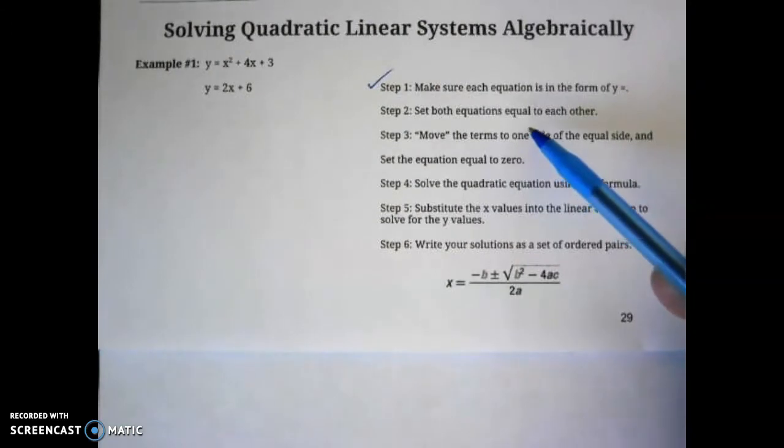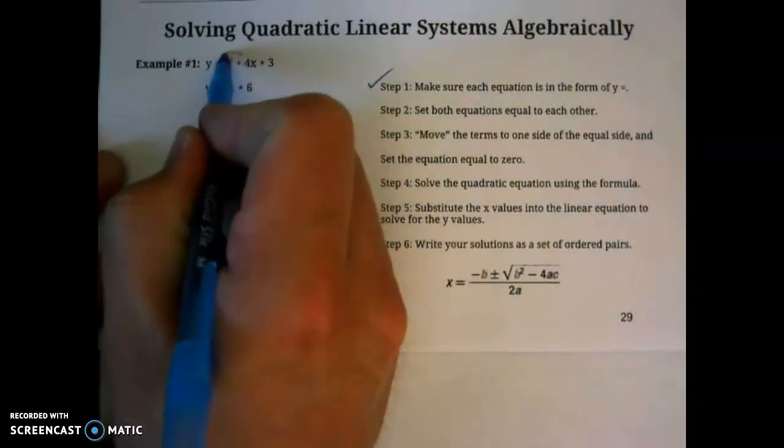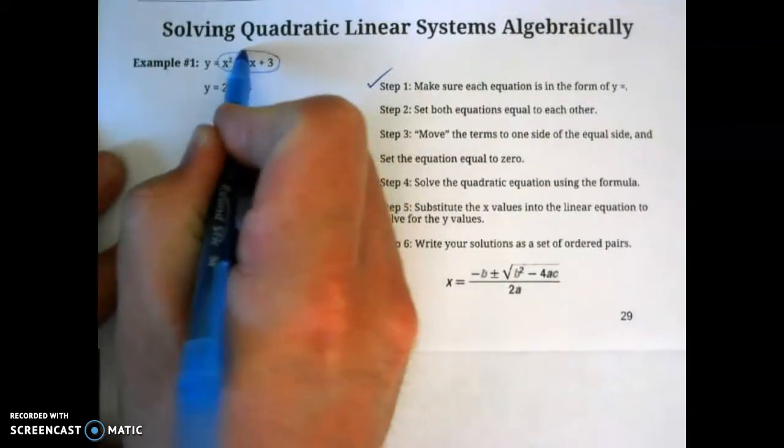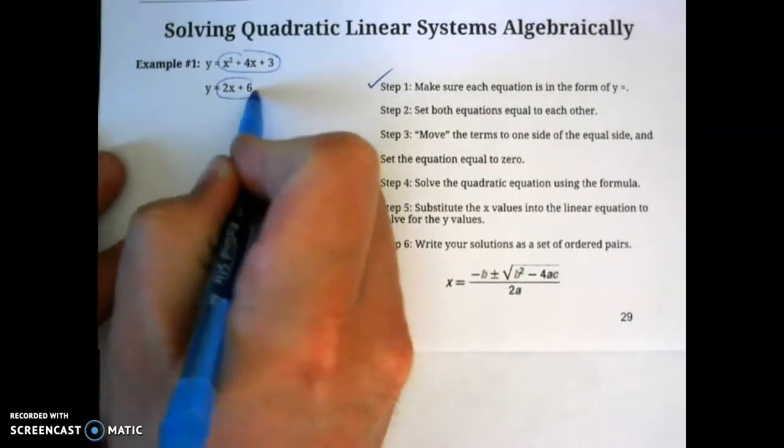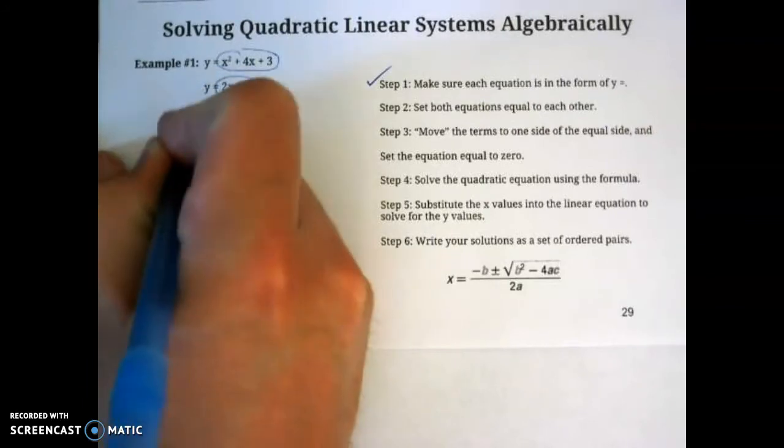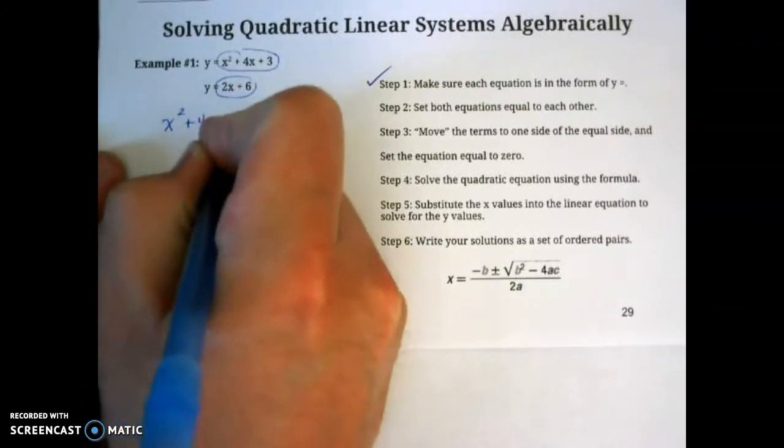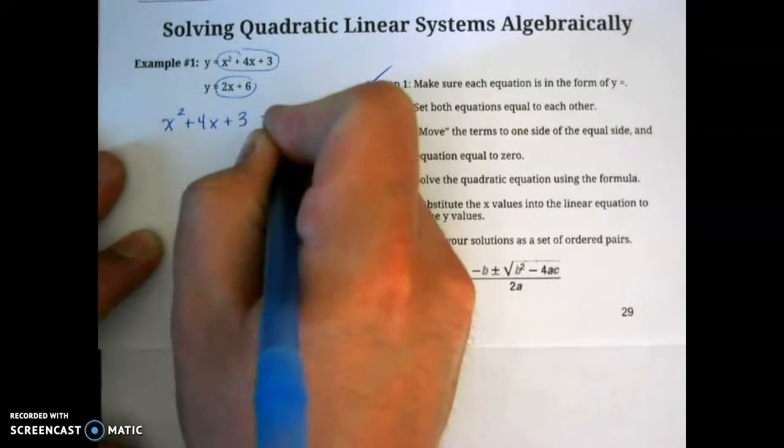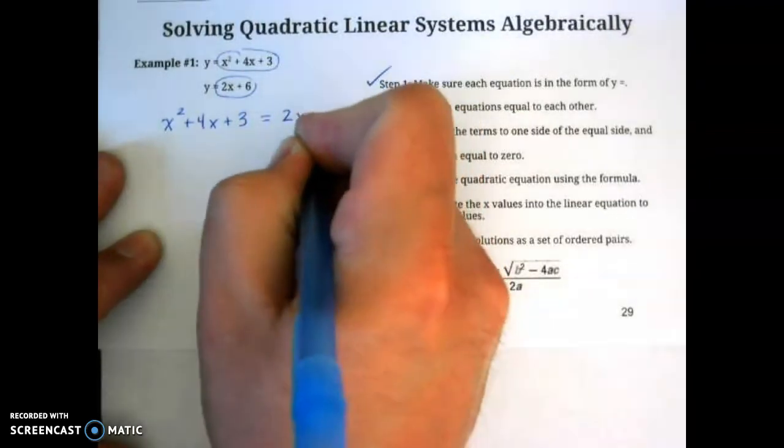Step two is going to be to set both of these equations equal to one another. So you're basically going to take your x squared plus 4x plus 3 and your 2x plus 6 and set them equal to one another. So we have x squared plus 4x plus 3 equals 2x plus 6.